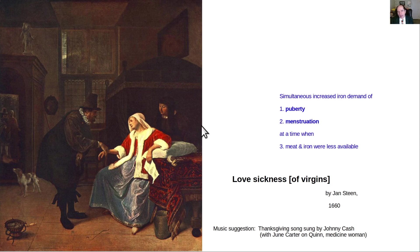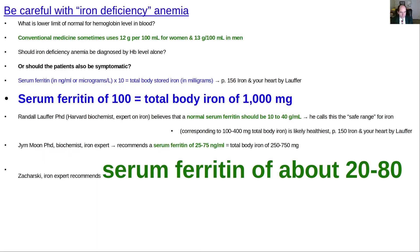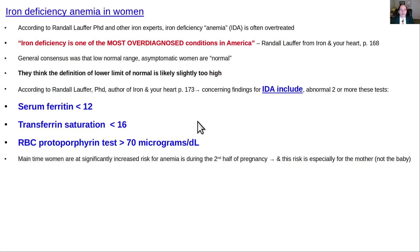Regarding iron deficiency anemia — this is especially a problem for young women entering puberty, who are simultaneously increasing their growth rate and needing more iron while beginning to menstruate and losing iron. It's also been called the 'love sickness disease of virgins' for that reason. Experts in iron biochemistry feel it is often over-treated. If a woman is healthy, vigorous, and asymptomatic, she may actually be doing well regardless of the threshold. Key parameters include whether serum ferritin is very low and whether transferrin saturation is less than 16%.